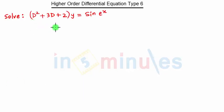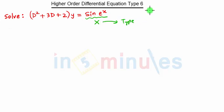The question is (D² + 3D + 2)y = sin(eˣ). Till now we have used terms x which are of Type 1, 2, 3, 4, or 5, but as you can see here it is sin(eˣ), which is not matching with any of those types. So when it does not match with any of the types, it will be of Type 6.